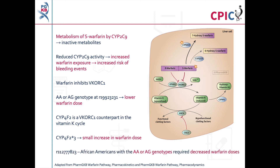The variant RS12777823 is found in the CYP2C gene cluster. This is not shown on this pathway image. African American patients with the AA or AG genotypes at this variant have been found to require lower doses of warfarin.